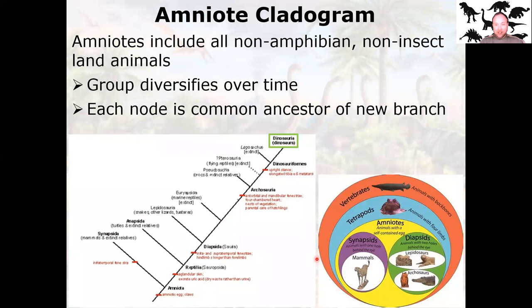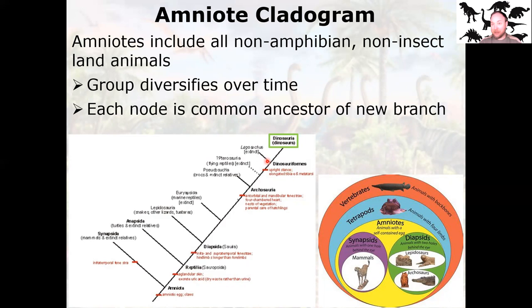Let's talk about the amniote cladogram again. We've seen this a bunch of times. Vertebrates — all animals with a backbone. Tetrapods — animals with four limbs. We are amniotes. Us and dinosaurs are still the same up to this point, but then there's the synapsids with that single hole behind the eye, and the diapsids with two holes behind the eye. That's all the modern lizards, snakes, reptiles, and the archosaurs, of which dinosaurs are a part. Dinosaurs are at the top, but remember — just because they're at the top doesn't mean they're better or more advanced. It doesn't mean evolution was slowly working towards the inevitability of dinosaurs.